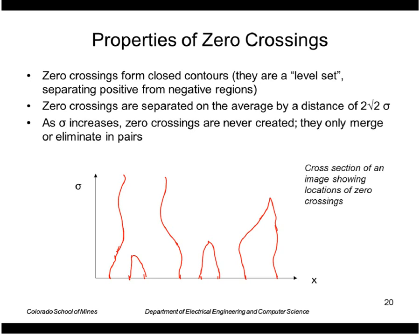Zero crossings, some other properties of them, they form closed contours because they're a level set. It's like a shoreline that represents sea level. It separates the negative portions of the image from the positive portion, so it has to be closed.